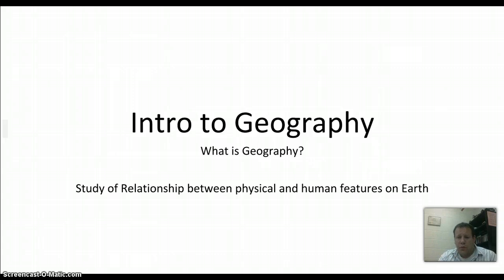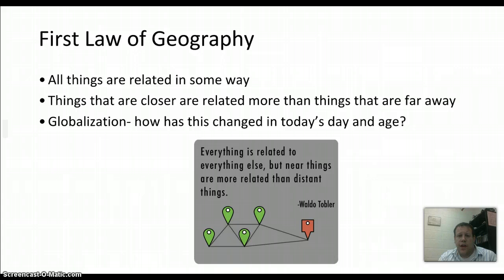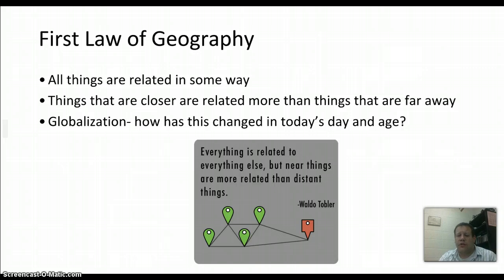The first thing we're going to talk about in geography is the first law of geography. Basically, it's that all things are related in some way. A guy named Waldo Tobler came up with this and figured out that in some way, shape, or form, all things are related. But things that are closer are more related than those things that are distant. So in some way we're related to something happening in China, but we're more related to things happening in Madison. It sounds like common sense, but it really is true.